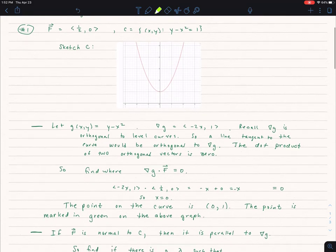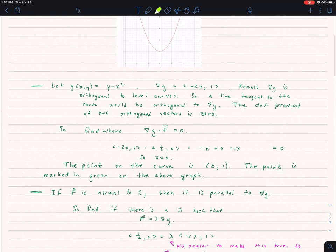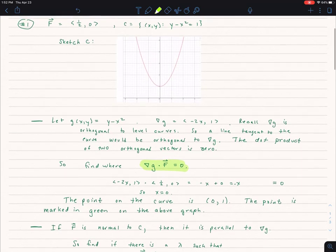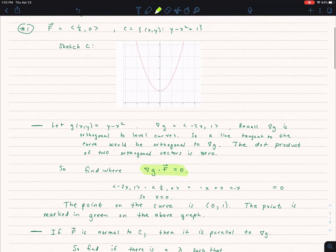So let's go ahead and find out where del G dot F is equal to zero. So the gradient of G is negative 2x comma 1 dotted with the F that I'm given, one-half 0, and that gives me negative x. When I set that equal to zero that means that x is equal to zero.